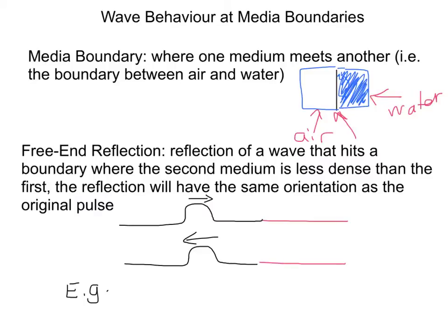An example of this is a flag. If you have a flag that's flapping in the wind, that wind is creating waves. When it gets to the end of the flag, it's hitting air. Since it's free end, it's not actually attached to air, it causes the wave to bounce back with the same orientation.